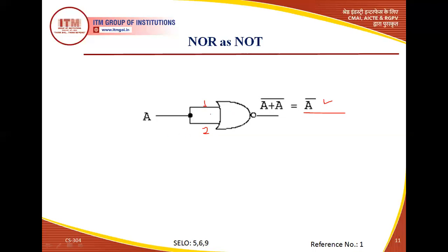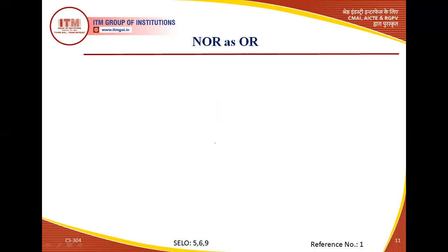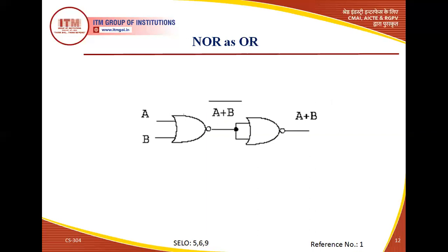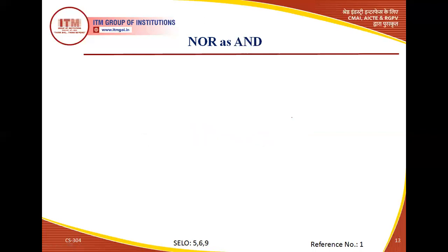To use NOR as an OR gate we use two NOR gates. The first is used as a simple NOR gate giving output (A+B)̄. The second NOR gate is used as an inverter, inverting the output of the first, giving A+B — which is the OR gate output. So NOR-to-OR requires two NOR gates: first as simple NOR, second as NOT gate.